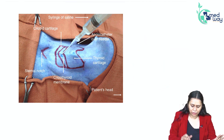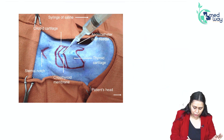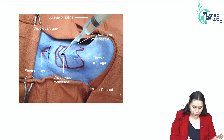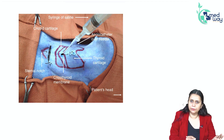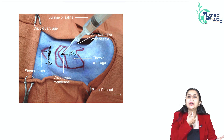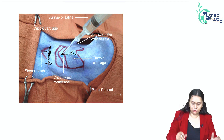Comparing with cricothyroidotomy: for cricothyroidotomy, we are putting the needle in between the thyroid and cricoid — that is the cricothyroid membrane, high up in the neck. For tracheostomy, the insertion point is just one or two centimetres above the sternal notch, low in the neck. So in an image-based exam question, if the needle is inserted high in the neck between thyroid and cricoid, it is cricothyroidotomy. Low in the neck, it is tracheostomy.